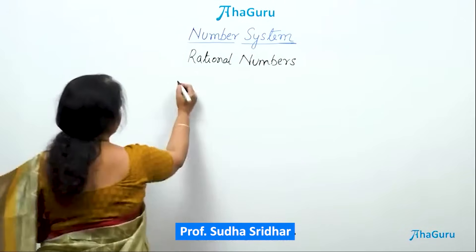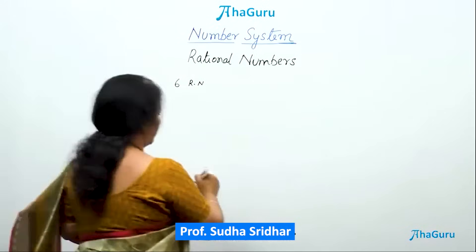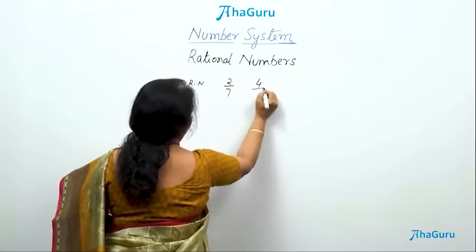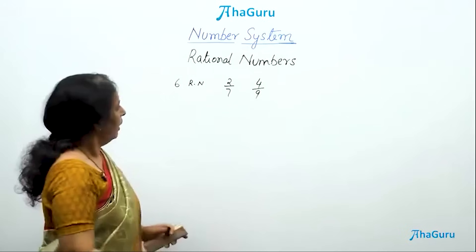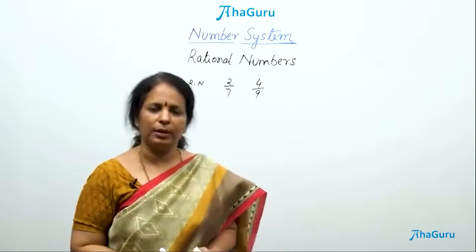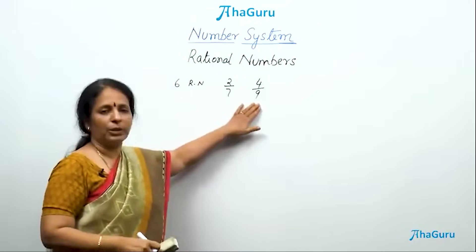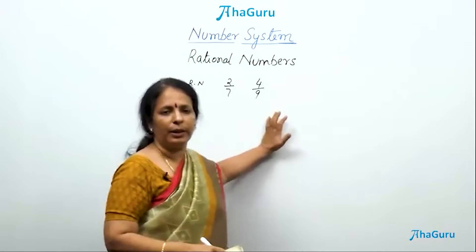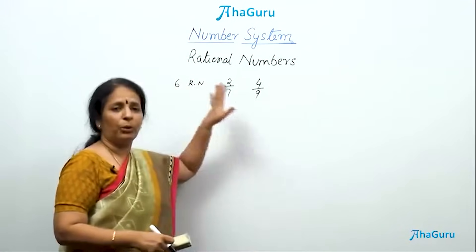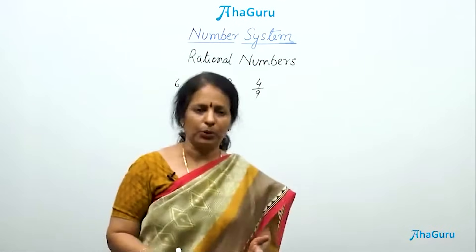Find 6 rational numbers between 2/7 and 4/9. As we have understood from our conversation, between 2 rational numbers there can be infinite rational numbers. Selecting 6 out of them is purely our choice and the method we use.